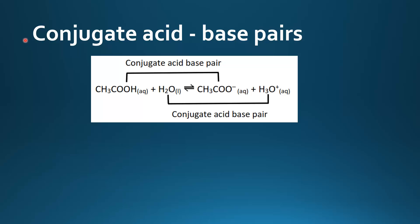In this video we look at conjugate acid-base pairs. In this reaction we have ethanoic acid reacting with water to form the ethanoate ion and the hydronium ion, and in the reverse reaction we have the hydronium ion reacting with the ethanoate ion to form water and ethanoic acid.